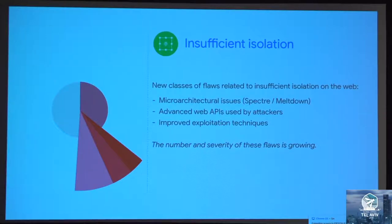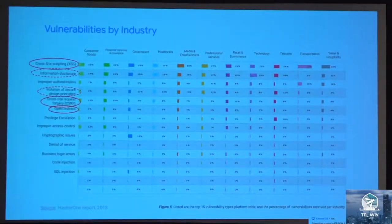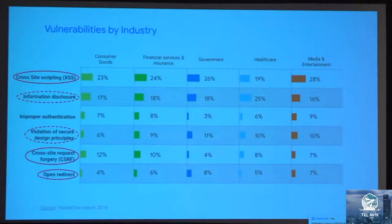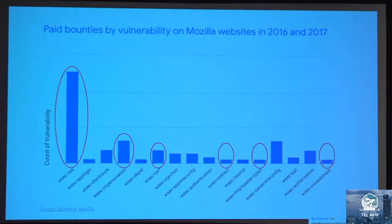Cross-site request forgery is just one of these isolation-related issues. There are also cross-site leaks, timing attacks, and lately a couple of new classes of vulnerabilities that fall into this category of insufficient isolation — the most known new one being Spectre, which is a microarchitectural issue. You might say this chart looks great but it's maybe a bit Google-biased, and you'd be right. But if you look at other VRP data, for example from HackerOne, you'll see similar trends for cross-site scripting and cross-site request forgery. Mozilla reports similar statistics as well.